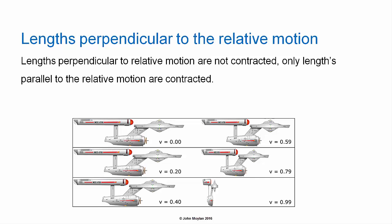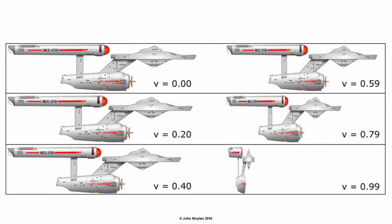Lengths perpendicular to relative motion are not contracted — only lengths parallel to the relative motion are contracted. In the example shown, for a vessel travelling from left to right, as the relative velocity of the spaceship to a stationary observer increases, the length of the spaceship decreases while the height remains the same. It is only the length in the direction of the relative velocity that is contracted.